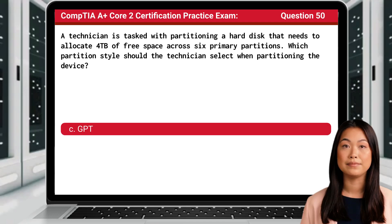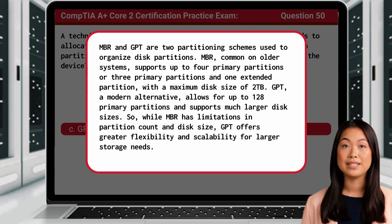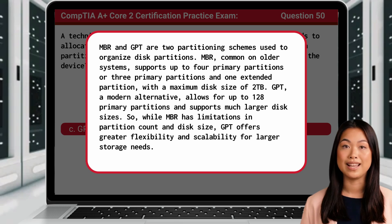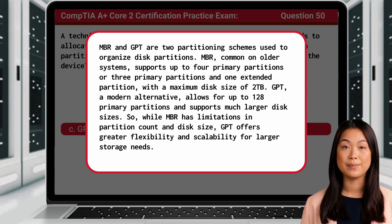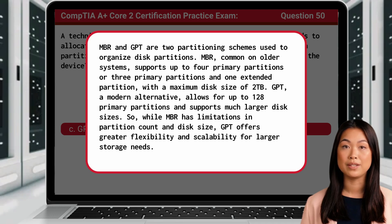The answer is C. GPT. MBR and GPT are two partitioning schemes used to organize disk partitions. MBR, common on older systems, supports up to 4 primary partitions or 3 primary partitions and one extended partition, with a maximum disk size of 2 terabytes. GPT, a modern alternative, allows for up to 128 primary partitions and supports much larger disk sizes. While MBR has limitations in partition count and disk size, GPT offers greater flexibility and scalability for larger storage needs.